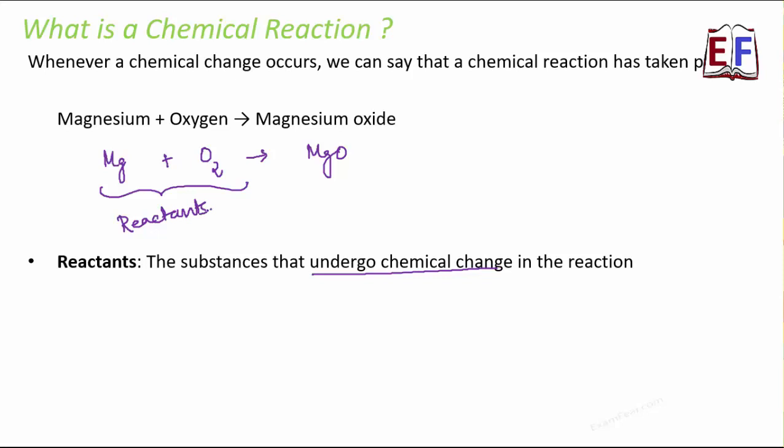Similarly, oxygen was earlier oxygen and now it became magnesium oxide, so it underwent a change. They are reactants and the new product which is formed is called the product. Basically, the new substance which is formed or the output of this chemical reaction is the product.